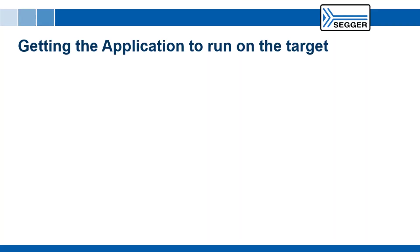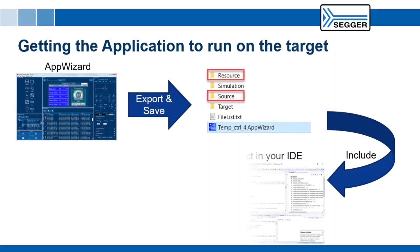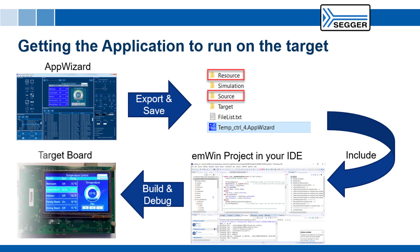In order to get the application onto a target board, the resulting code can be built with whichever IDE has been chosen to create the executable for the embedded target. AppWizard's output works with any embedded target system with at least 32 KB of RAM and 128 KB of Flash.